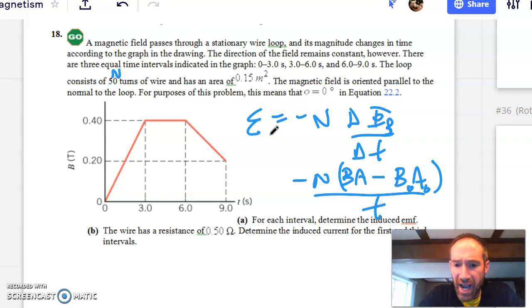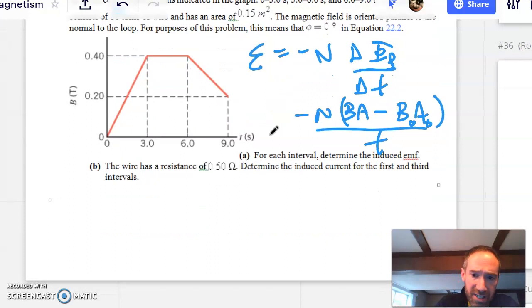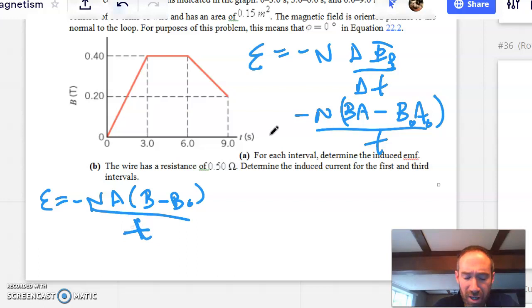Now, I can see that the A is staying a constant, and so I can factor that A out, and I will go down here, and I will say that this is the induced EMF is a negative N times the area times the B final minus B initial all over the time.